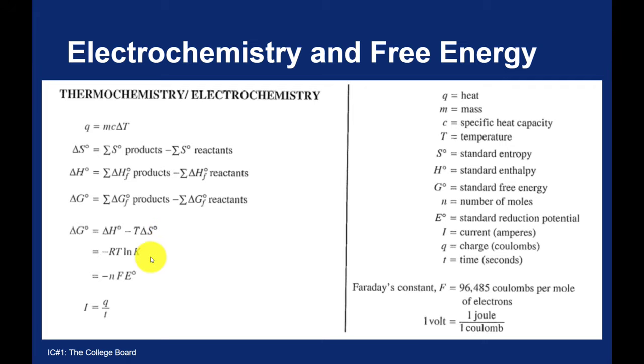We see Gibbs equation, and we see delta G as related to the equilibrium constant. We have some variables over here that should also be familiar: Q for heat, M for mass.